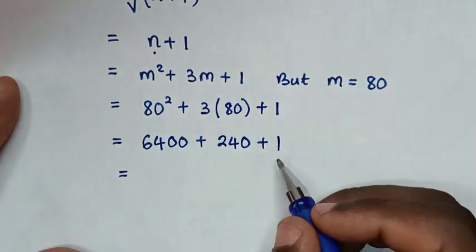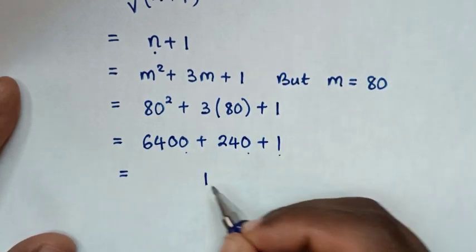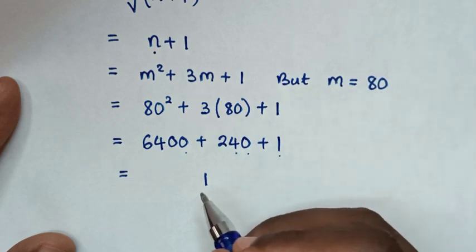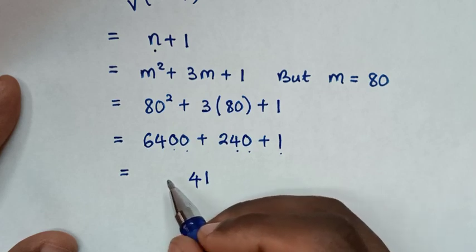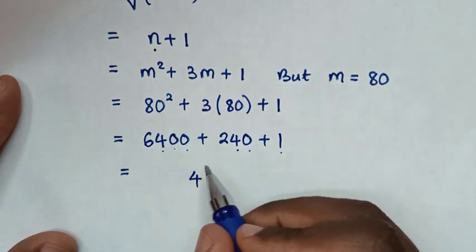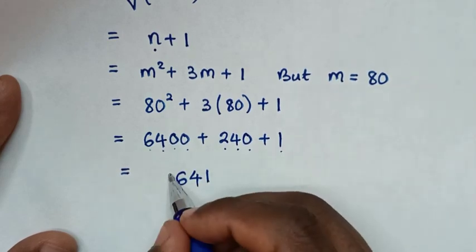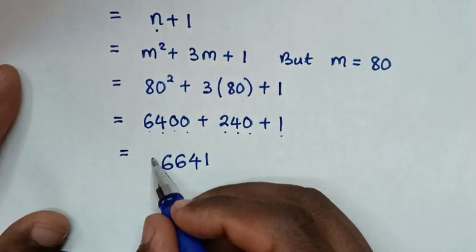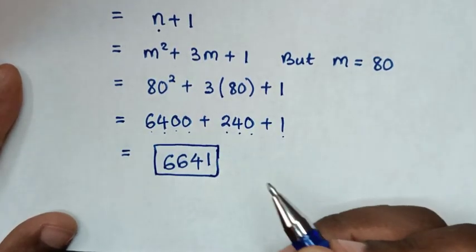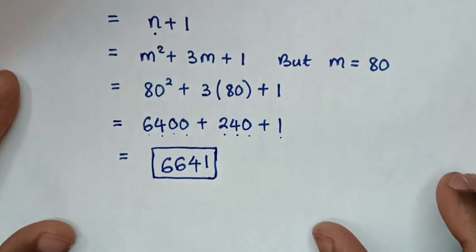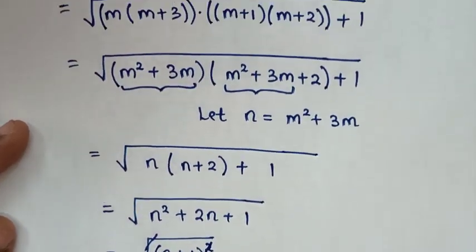Adding: 1+0+0 gives 1, then 4, then 4+2 is 6, then 6. Therefore, 6641 is our final answer. Thank you! See you in the next video. Bye bye!